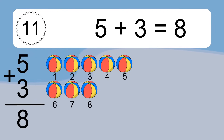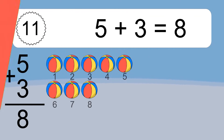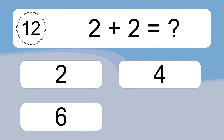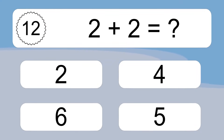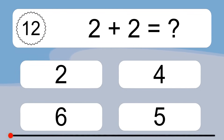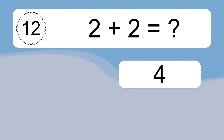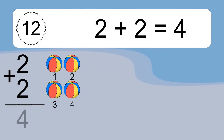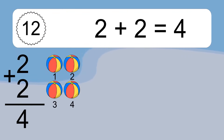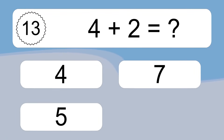Let's count it. 1, 2, 3, 4, 5, 6, 7, 8. 2 plus 2 equals what? 2 plus 2 equals 4. Let's count it. 1, 2, 3, 4.